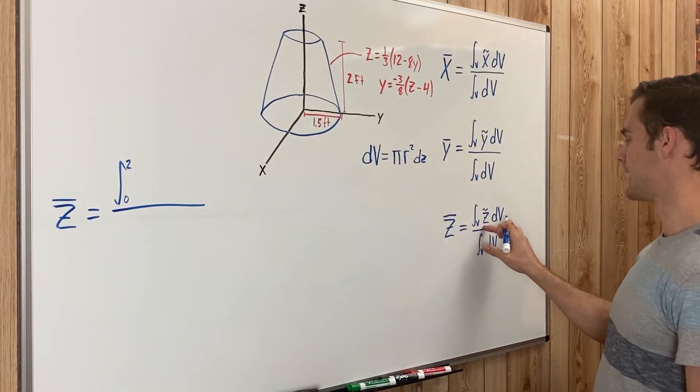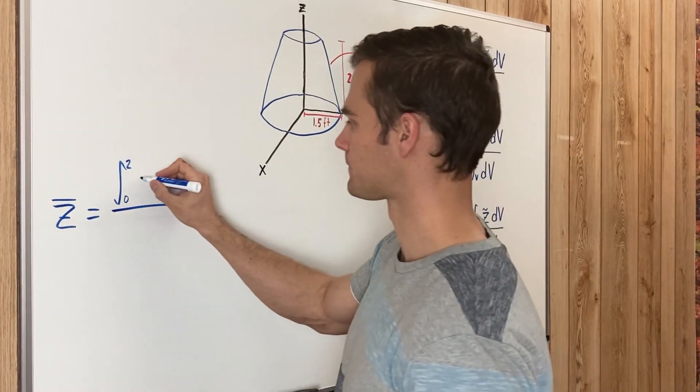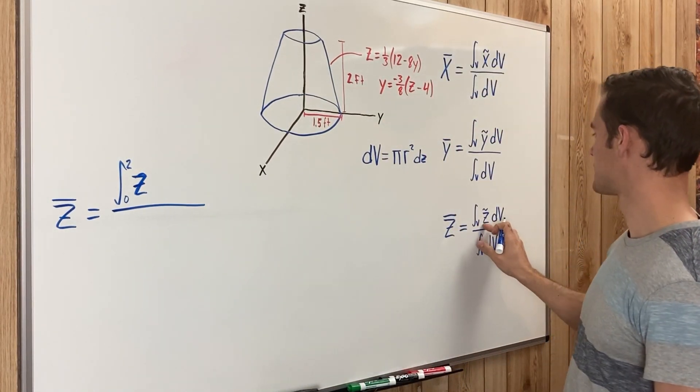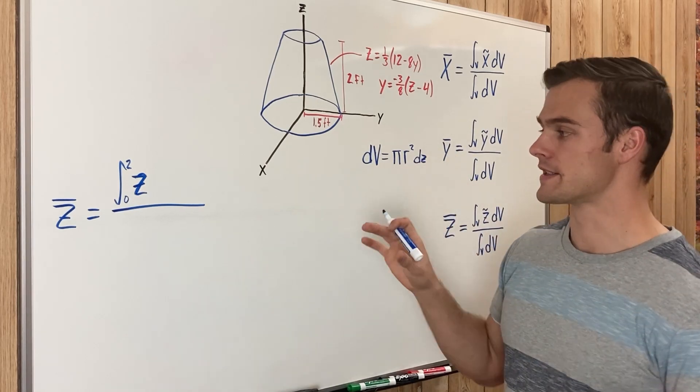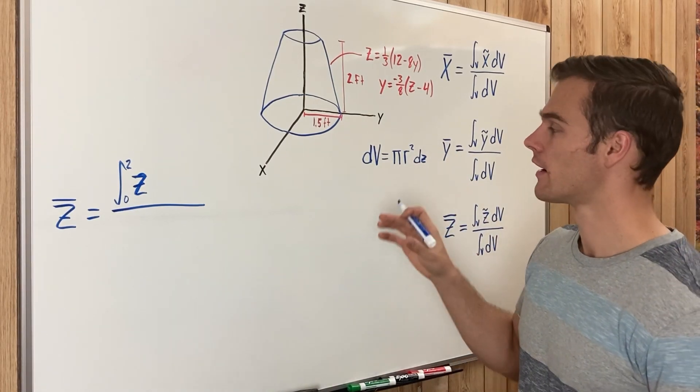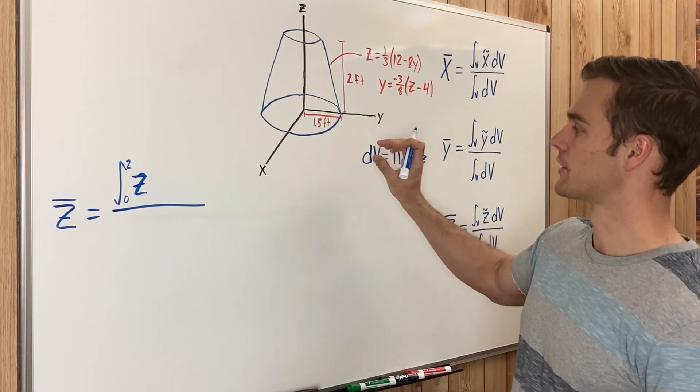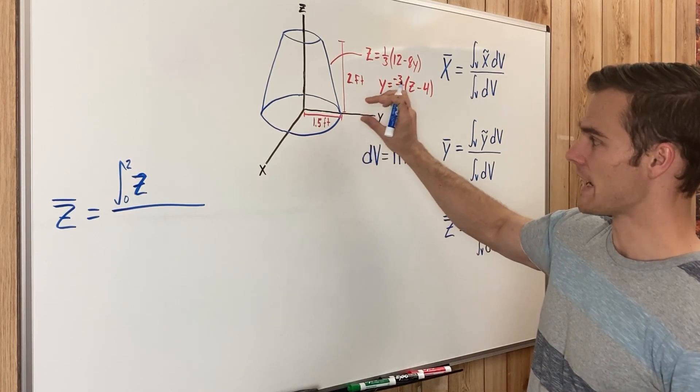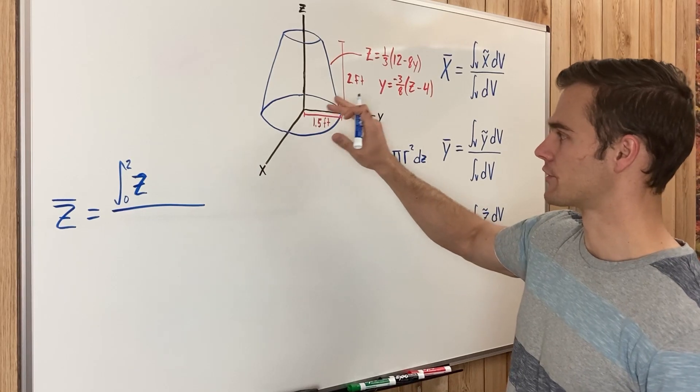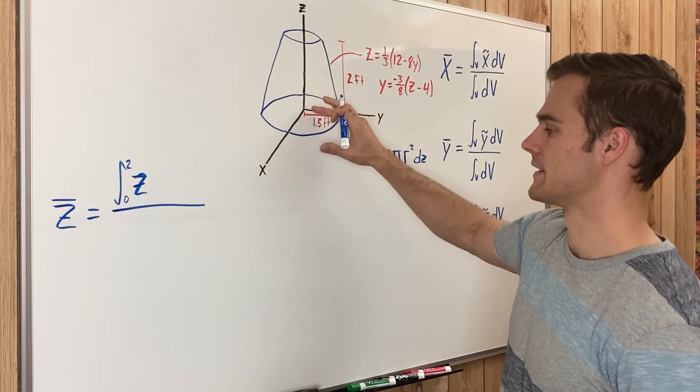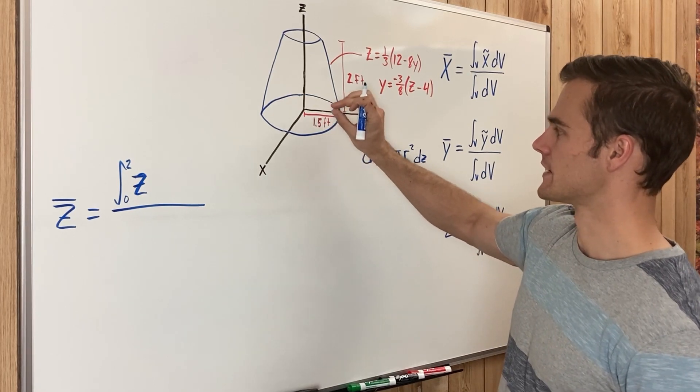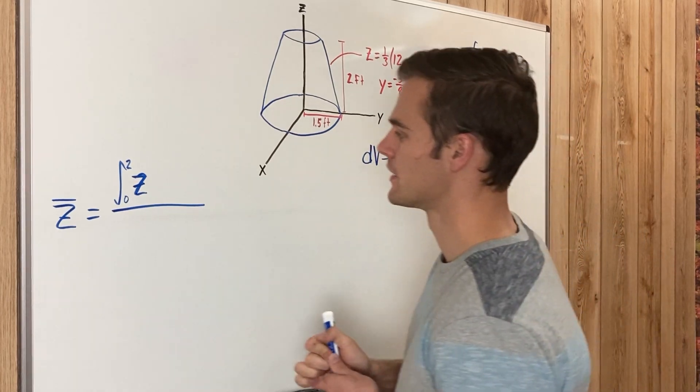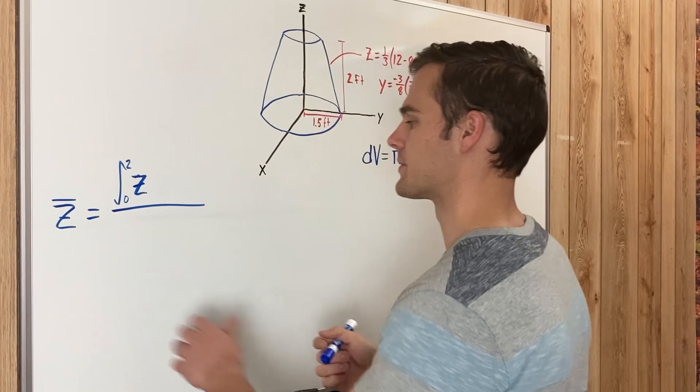And that is because the Z̃, just like X̃ and Ỹ, are the center of mass or the centroid of our differential volume. And our differential volume is the volume of our disk that we're adding up, and that disk, its center of mass or center of gravity is right in the middle, or in other words it's right at Z, because each of those disks is going to be a differential height Z up the Z axis.